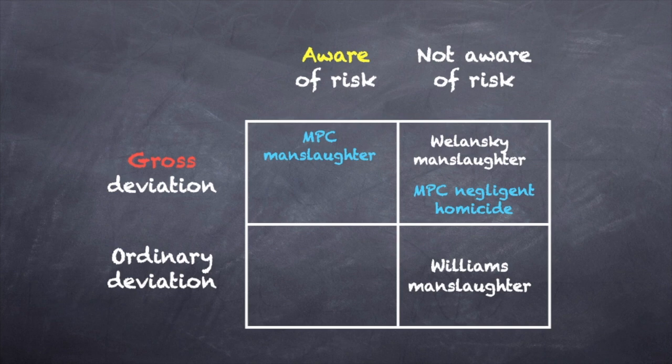It is worth noting that Washington State has since redefined the crime of manslaughter to require that recklessness be proven, and it also introduces an offense of criminally negligent homicide. Let's take a step back to survey the Model Penal Code map.